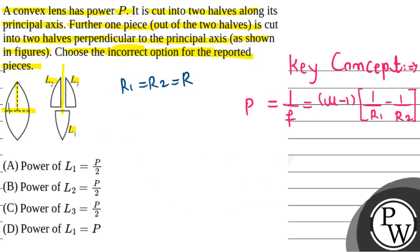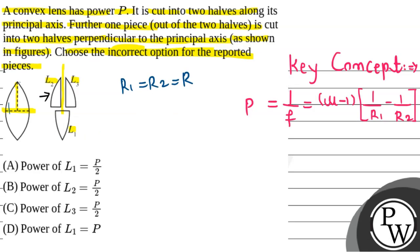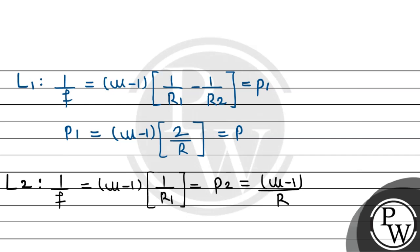For the L2 piece — this is the piece that is curved on one side and flat on the other. Since one side goes to infinity, R2 is infinity, so 1/R2 = 0. The focal length for L2 gives us: 1/f = (μ − 1) × (1/R), so P2 = (μ − 1)/R.